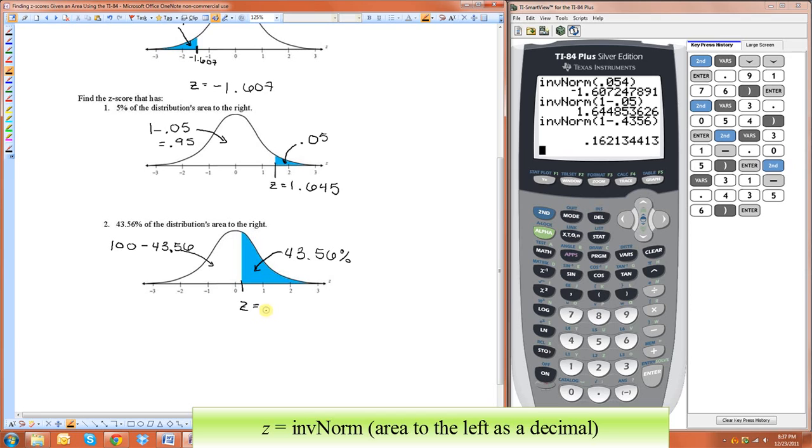This z will be, just do invNorm of 1 minus 0.4356. So it's 0.162. Definitely don't put in 43.56. Make sure you put 0.4356 because it does need to be represented as a decimal.